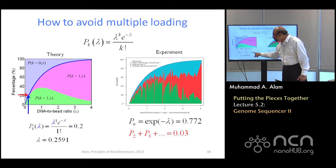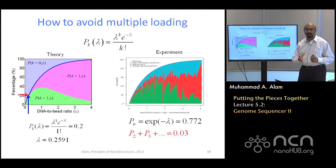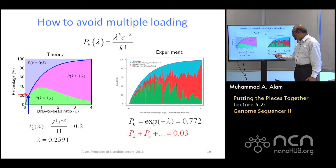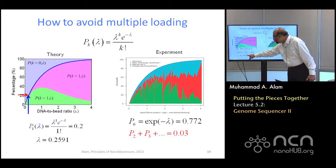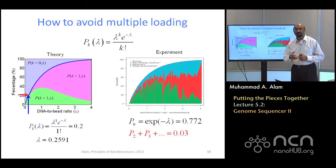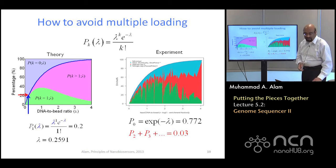Well, if the lambda is 0.2591, if you put it in, the probability is, remember, with k equals 0, it simply becomes e to the power lambda. 77% of the bead has nothing. In order to get 20% of the bead, one fifth of the bead loaded by one DNA. What about the probability of loading a 2-DNA, 3-DNA, 4-DNA, and so on? If you add these two, probability of getting 1 and probability of getting nothing and subtract from 1, it is 0.03%. That means about 3% of the beads will have more than one DNA.